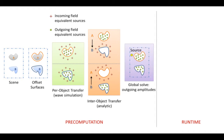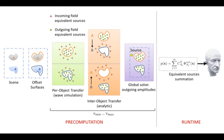Finally, we solve a global system that captures all orders of interactions between the objects, yielding the strengths of all outgoing equivalent sources. At runtime, we sum the contributions of outgoing equivalent sources for all objects, yielding the response at a moving listener in real time.